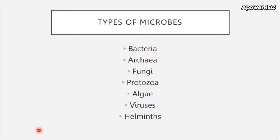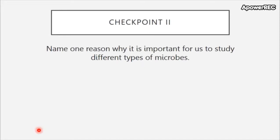Now let's get into the different types of microbes — microbes are highly diverse. We have bacteria, archaea, fungi, protozoa, algae, viruses, and helminths. We're going to briefly cover each one today. This is not an exhaustive list, but these are the microbes we will be covering in class. Checkpoint two: name one reason why it is important for us to study different types of microbes. Try to come up with a unique reason — feel free to look at the different microbes listed or wait until the end of the lecture.